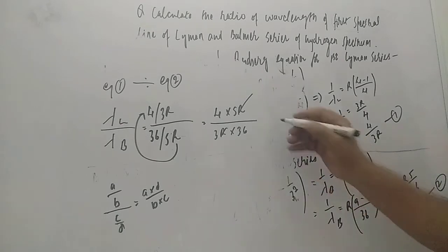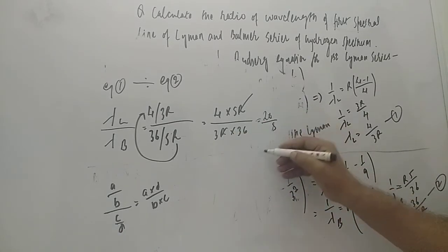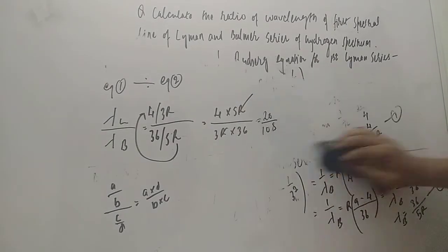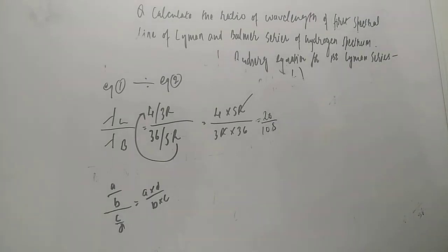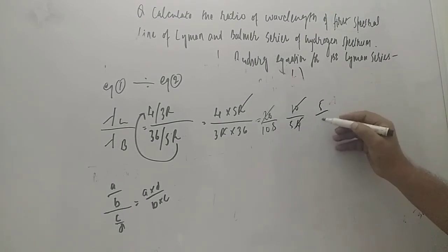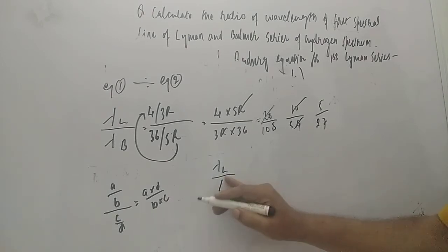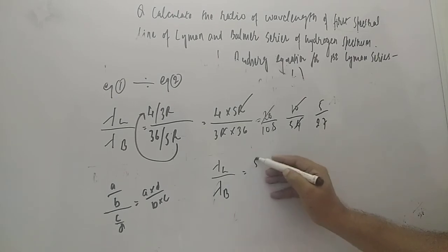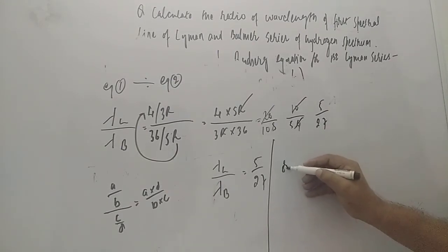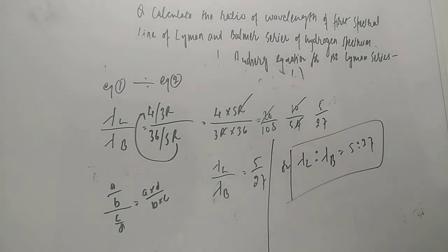The R cancels out, giving 20 upon 108. Simplifying: 20 by 108 reduces to 5 upon 27. Therefore, lambda L upon lambda B equals 5 upon 27. This is our required answer. Thank you so much for watching.